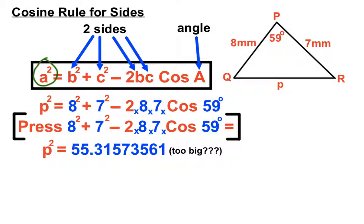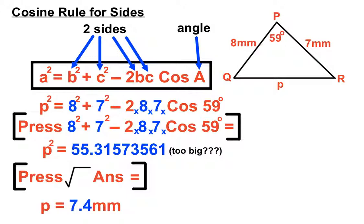So we're going to make sure we remember to square root our answer. So if we get 55.31, etc., in our calculator, before we clear that calculator, we'll press square root, answer, equals, and that'll process that and square root it for us, giving us the actual distance, the actual length of P, 7.4mm.